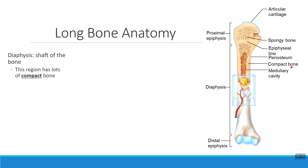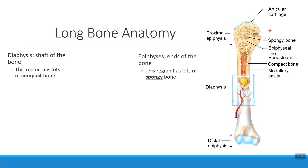Compact bone tissue is very strong bone tissue. Compare that to the two ends of a long bone. The ends of a long bone are known as epiphyses. In the middle of the epiphyses, the ends of the bone, notice that these regions are filled with spongy bone tissue.